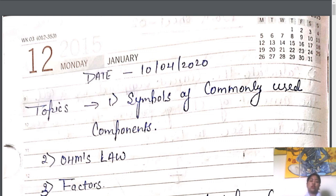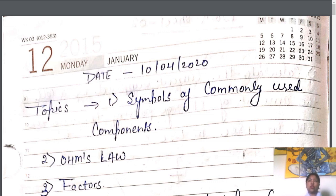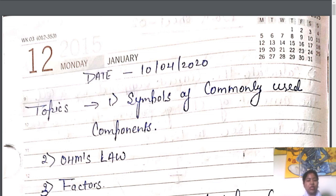So what is electric current? The rate of flow of electric charges is defined as electric current. Electric current is measured in the ampere unit and it is formulated by I equals to Q upon T, that is the rate of flow of charges.